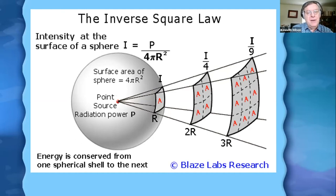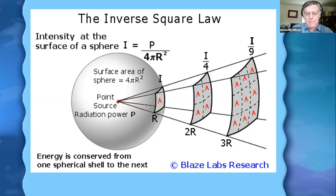So this is the inverse square law. If we were to go three times as far out, you're not spread out over three times the area, but nine times the area. Basically, the farther away from the source of light — as with the farther away you are from the source of gravity — the intensity rapidly goes down by this inverse square law.